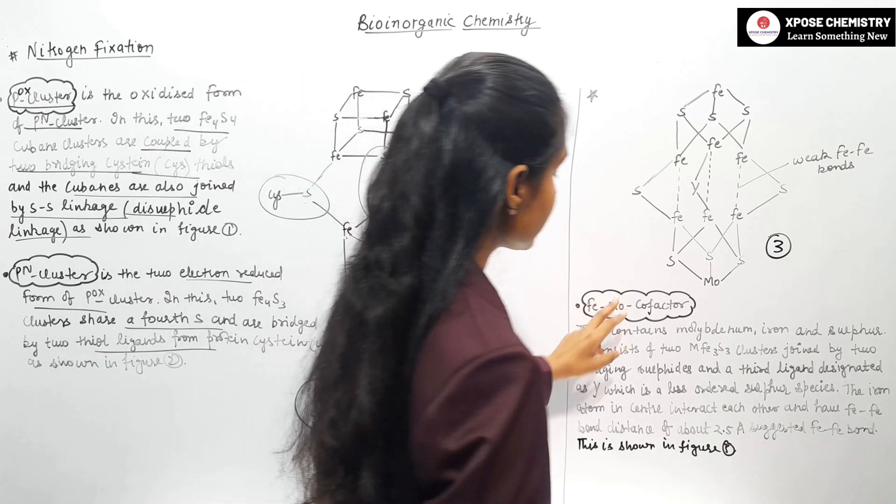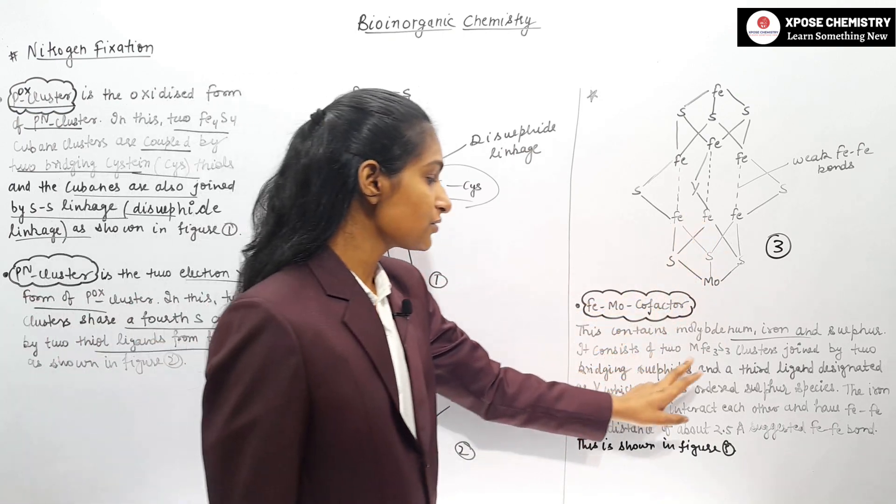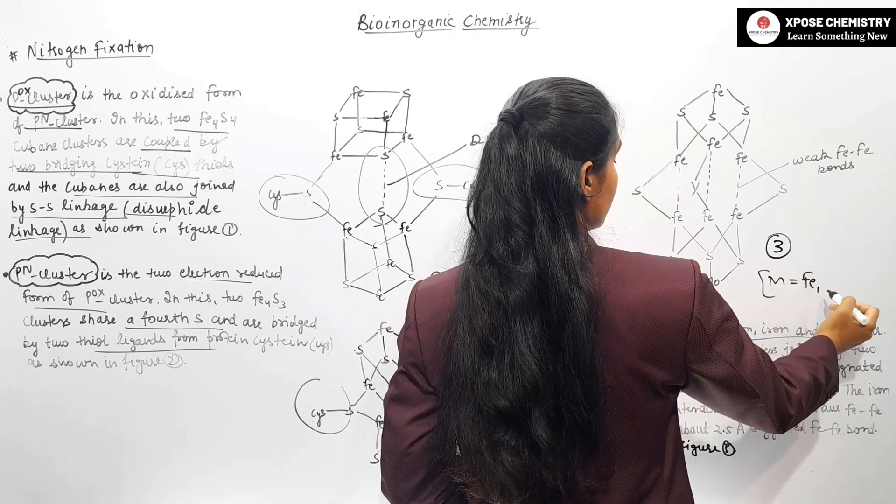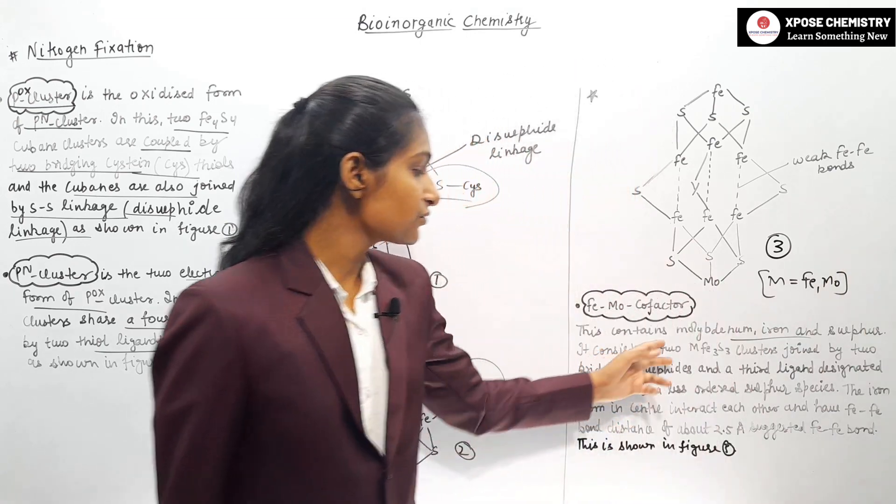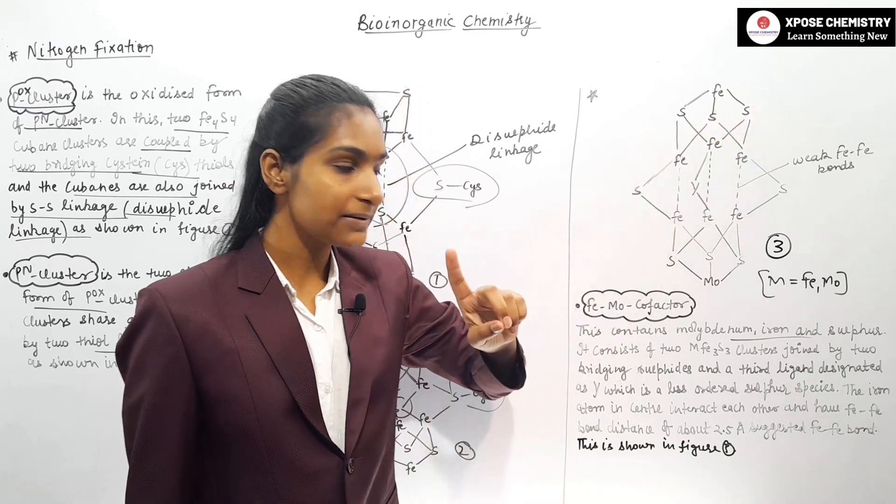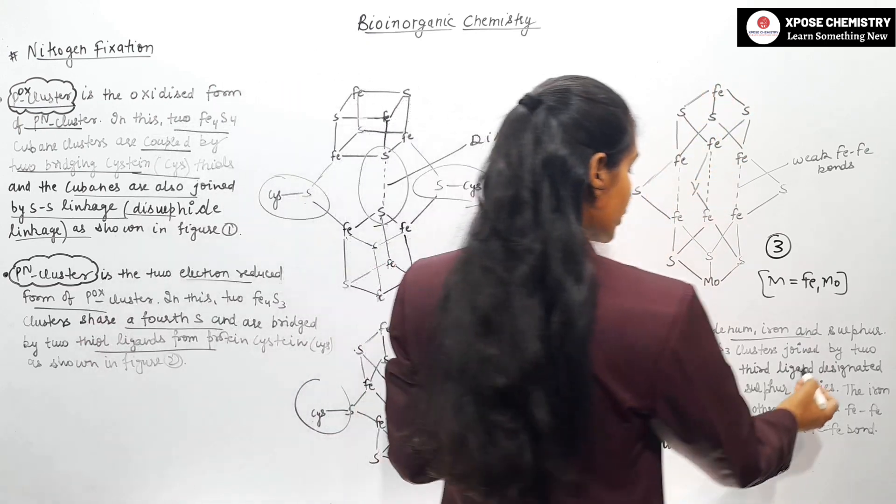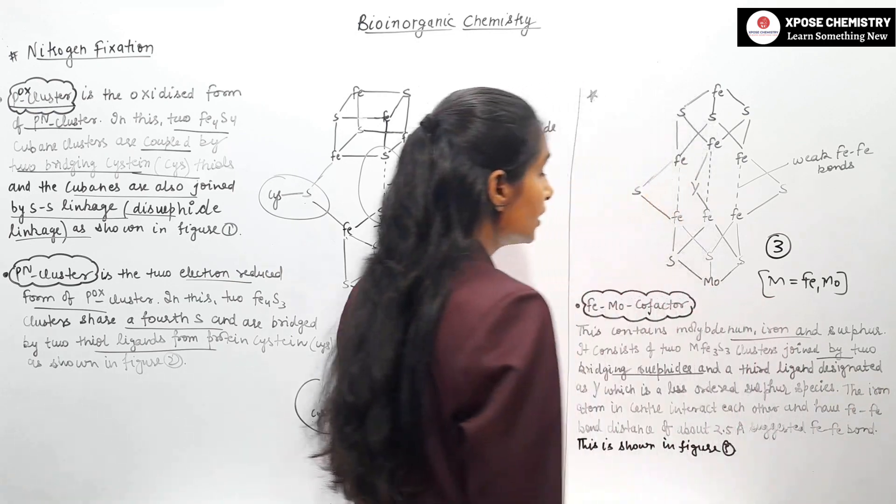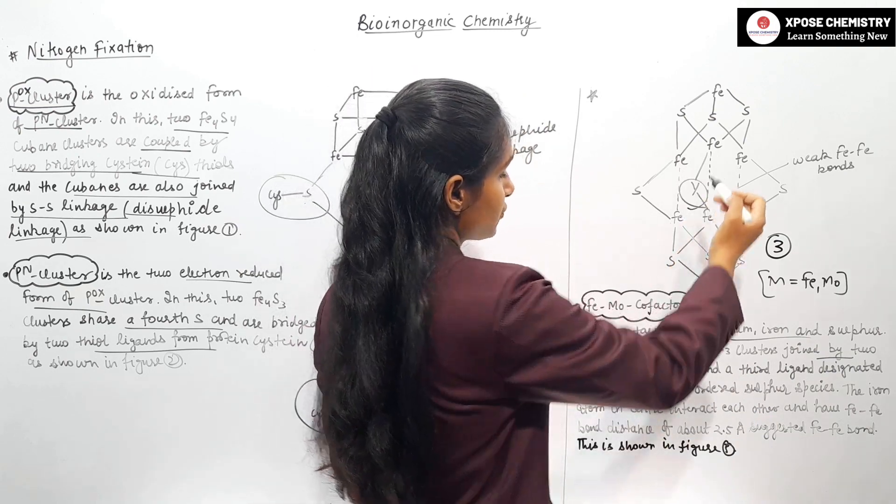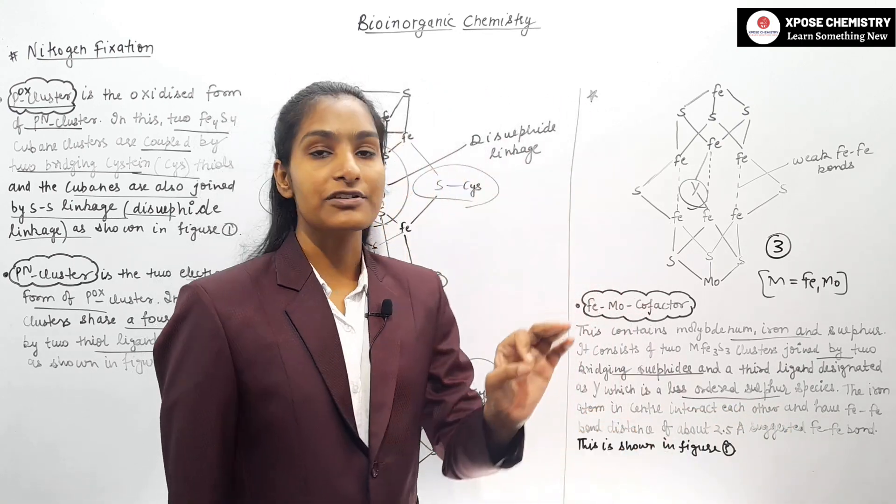Fe-Mo cofactor contains molybdenum, iron and sulfur. It consists of 2 Fe3-S3 clusters, where M is molybdenum and Fe is iron. The clusters are joined by two bridging sulfides, and the third ligand is designated as Y, which is a less ordered sulfur species.